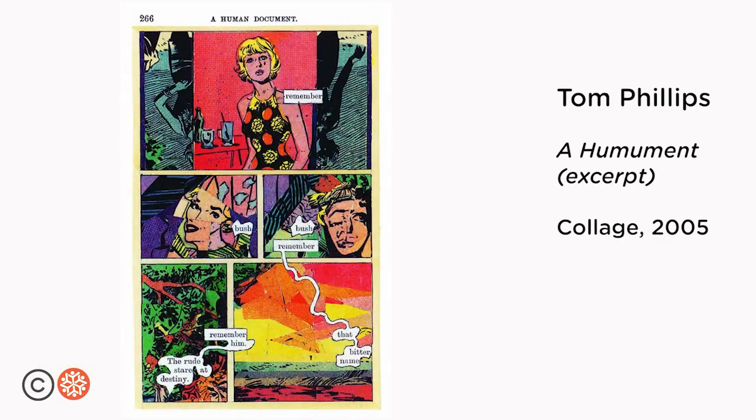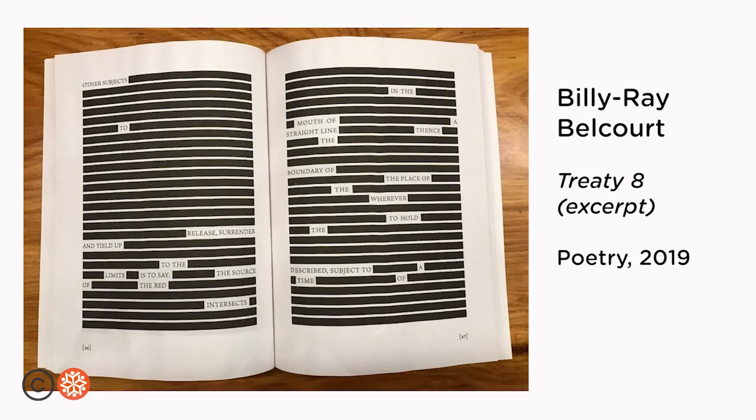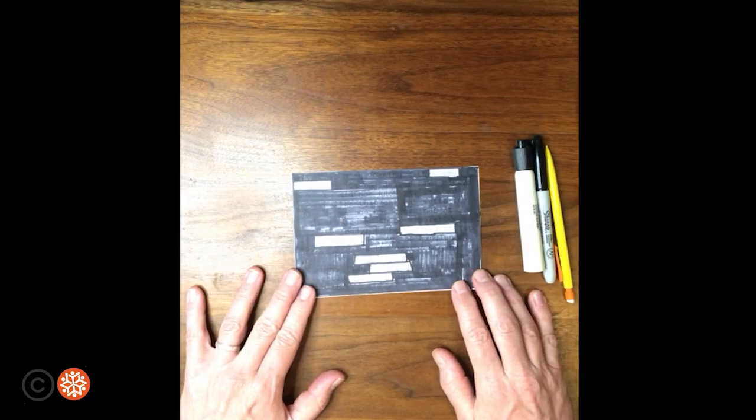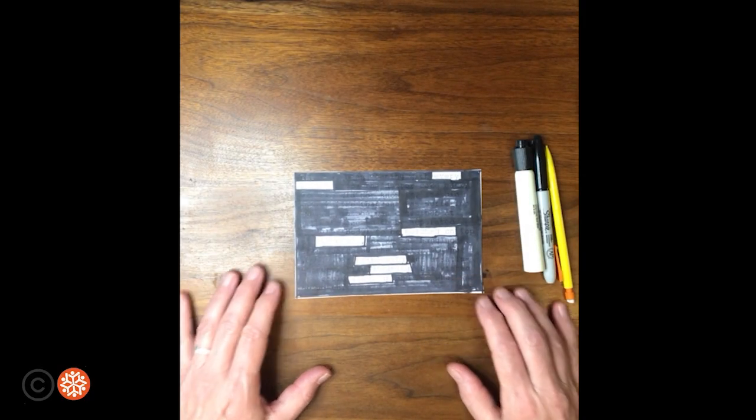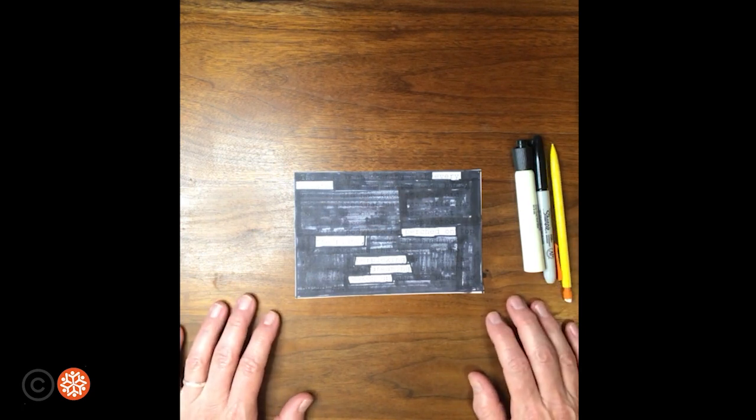Today, we're going to look at a few analog forms and a few digital forms of erasure poetry. Okay, let's get started. The simplest form of erasure poetry is blackout poetry, where you use a black marker to block out the text that you don't want people to be able to read.